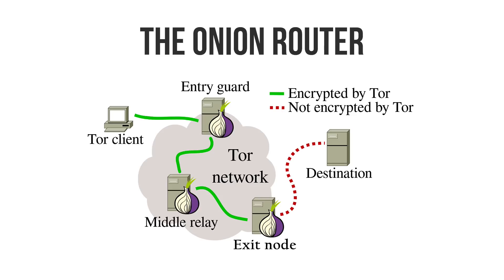Tor encrypts the application layer of a communication protocol stack multiple times, and then relays the data through several randomly selected Tor relays. Inside the encrypted data is the next node destination IP address, and each one of those destination nodes are encrypted inside a separate layer. Each relay server will decrypt a layer to reveal the IP address of the next relay in the circuit, and then forwards the remaining encrypted data onto that node.